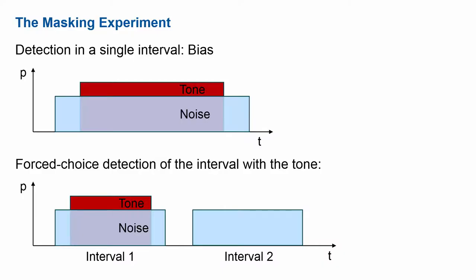To objectify experimental results we often use forced choice experiments where we play two, three, or even more intervals and hide the signal in one of those intervals. The tone is randomly placed in the first or second interval, so the listener does not know which interval contains it and must detect which interval had the signal. By guessing alone you get 50% correct; 75% correct is our threshold criterion; 100% correct means you always detect the tone. This is the standard procedure used for masking experiments.